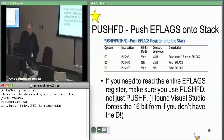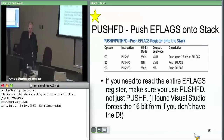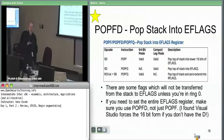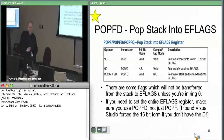PUSHFD takes your 32-bit EFLAGS register and pushes it onto the stack just like anything else. POPFD says whatever's pointed to by ESP right now, take that, read it off the stack, and stick it into the EFLAGS register. There are a couple of flags that you actually can't set — for security purposes, you don't want ring zero or ring three code being able to set them. But most of the flags can be set just by pushing and popping.